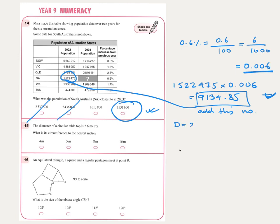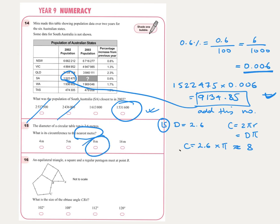Question 15: the diameter of a circular table top is 2.6 meters. What is its circumference to the nearest meter? Circumference equals pi times diameter, so 2.6 times pi. Using a calculator, that gives approximately 8. To the nearest meter, the answer is 8. Elimination can also be used here.